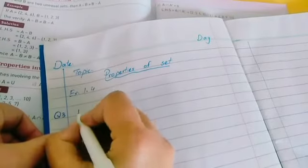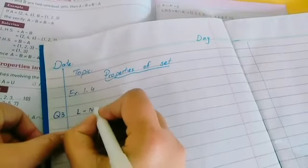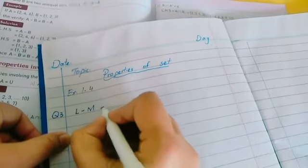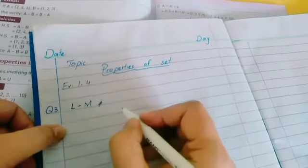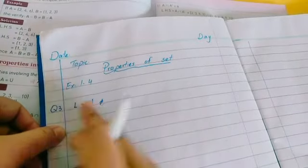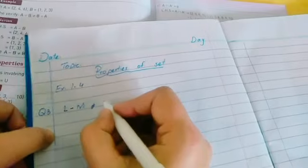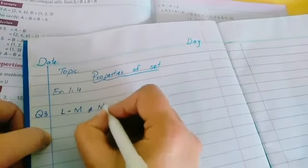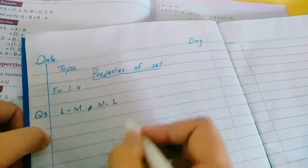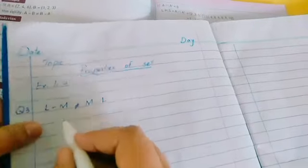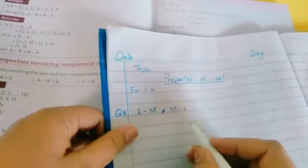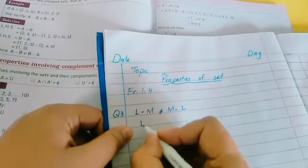When we talk about the third part, it says L difference M is not equal - when you have a cut through the equal sign it means not equal - the answers will be different. So M difference L, when we talk about their difference, we first write their elements.